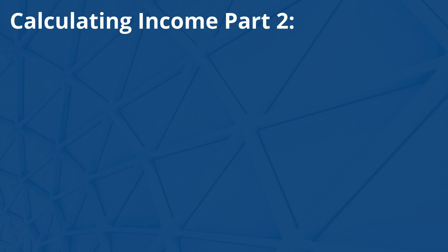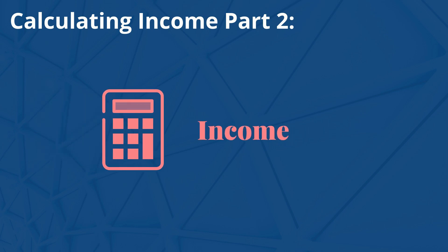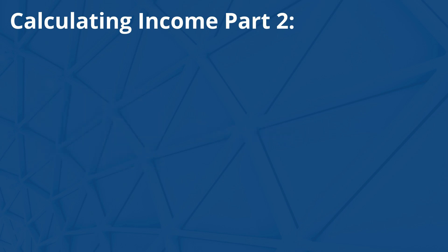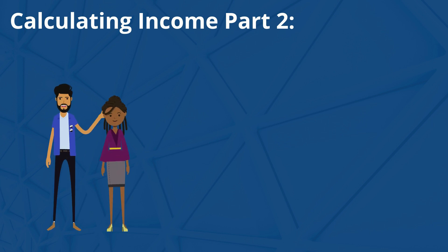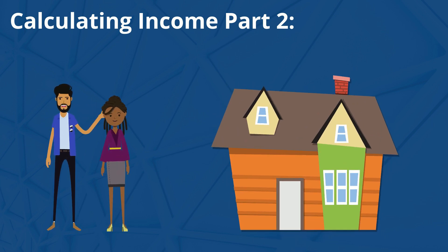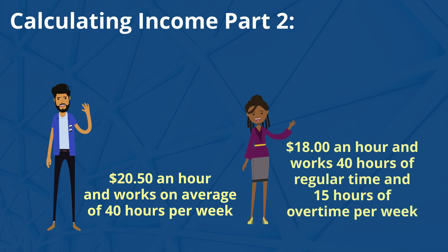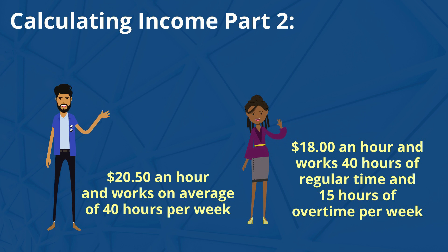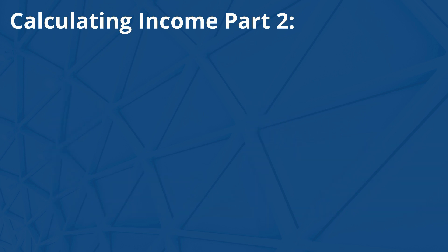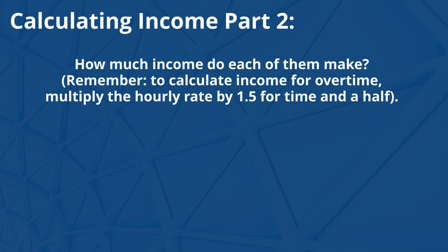Now that we've discussed the multiple ways to calculate income, let's go over a few examples. Asad and Jasmine are looking to purchase their first home. Asad makes $20.50 an hour and works an average of 40 hours per week. Jasmine makes $18 an hour and works 40 hours of regular time and 15 hours of overtime per week. How much income do each of them make?